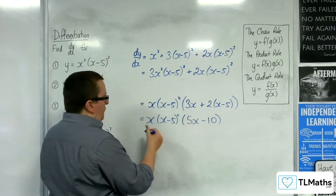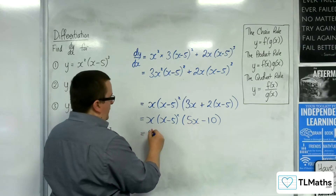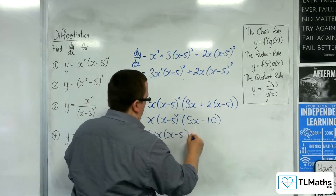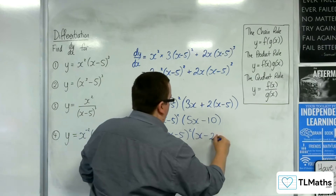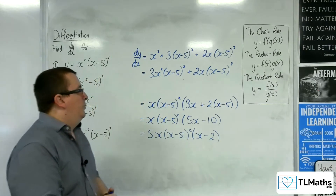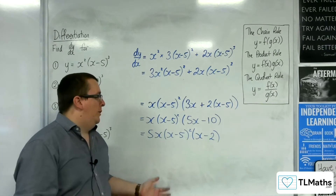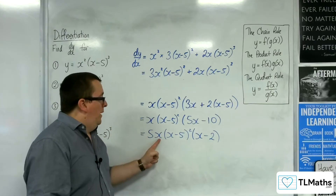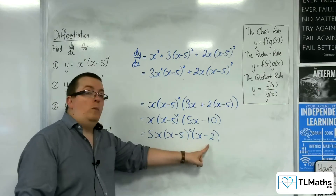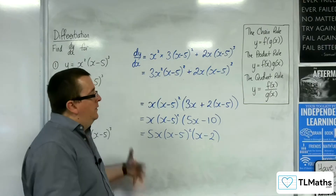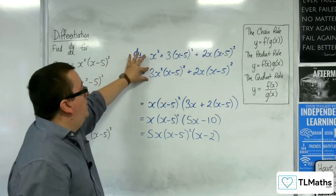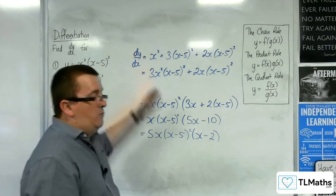You could then pull 5 out and factor that to get x minus 2. So if asked where the stationary points are, there are three: one when x is 0, one when x is 5, and one when x is 2. That's the dy by dx required for the first example — product rule.